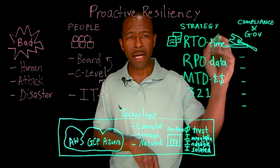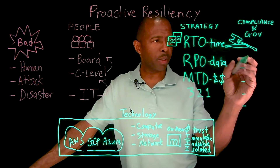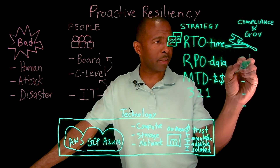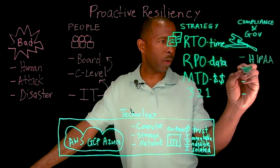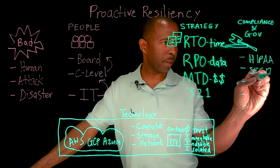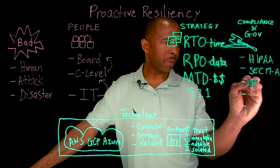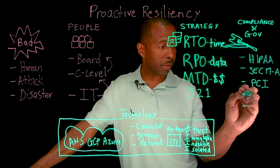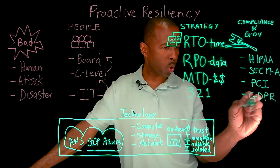As you continue to build out the proactive resiliency approach, keep in mind that you also have to comply with government regulations and laws. Depending on your industry, you may need to comply with HIPAA for healthcare, SEC 17-A or PCI DSS for financial services, or GDPR and CCPA for data privacy.